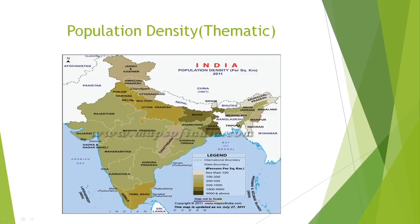In 2011, the population density map shows areas with less than 100 persons per square kilometer, areas between 100 and 200, and areas much larger than 400 persons per square kilometer.